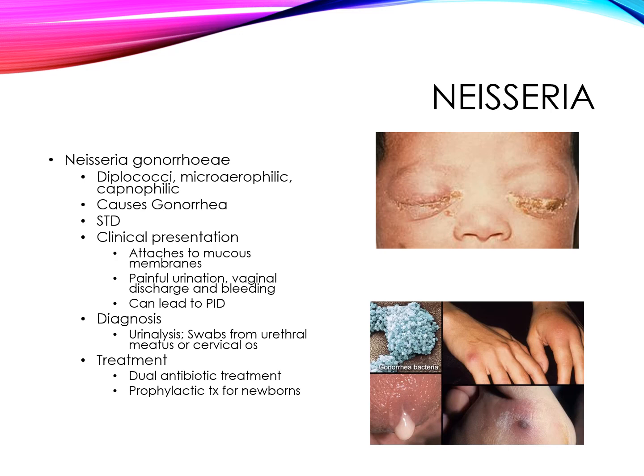Neisseria gonorrhoeae is a diplococcus bacteria that is microaerophilic and capnophilic. Capnophilic means they prefer a carbon dioxide-rich environment, and they are always considered a pathogenic organism. They are identified by culture, gram stain, and immunodiagnostic techniques, and many of the strains have become antibiotic-resistant, which has made it increasingly difficult to treat the disease caused by this bacteria, which is gonorrhea.